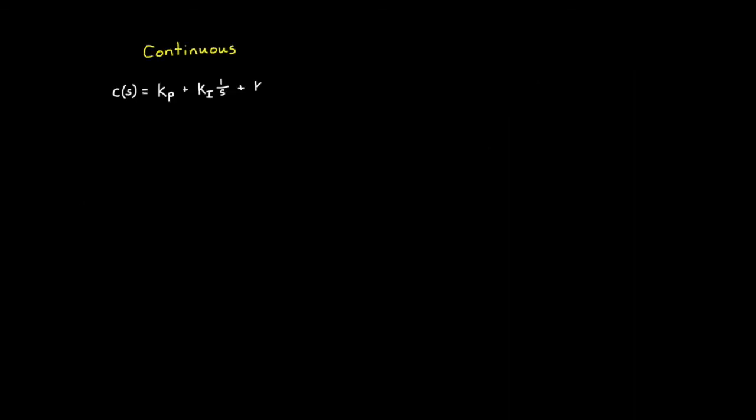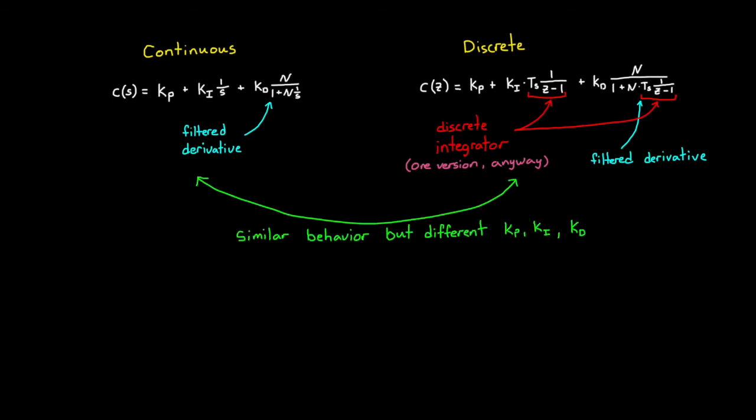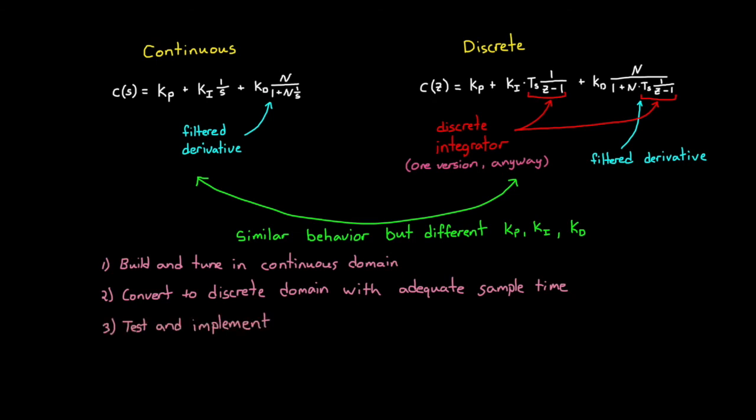Now, the structure of the PID algorithm also looks different between the continuous S domain and the discrete Z domain representations. They both have a filtered derivative term and there are integrals on both sides. But as you might expect, since they look different, the KP, KI, and KD terms are not the same between the two, even for equivalent systems. However, there are several different ways to convert from the S domain to the Z domain. And again, I go through many of them in the series on discrete control. So a typical approach to tuning a discrete PID controller is to first tune it in the S domain and then convert it to the Z domain while ensuring that the sample time is fast enough to keep the same behavior. Then you can implement this discrete PID controller on your digital computer and be confident that it will behave the way that you want.